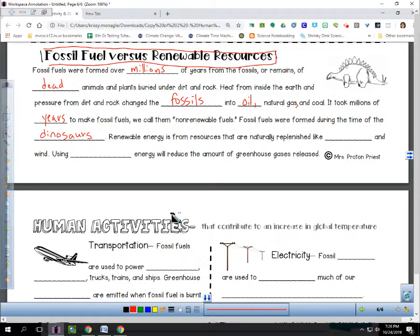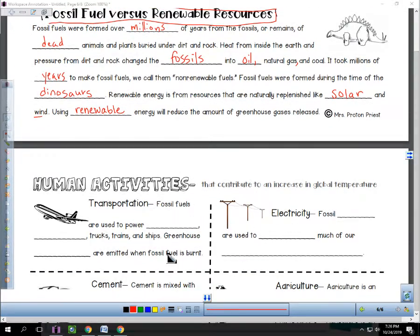Renewable energy is from resources that are naturally replenished, those natural resources that are renewed at the same rate, like solar and wind. Using that renewable energy will reduce the amount of greenhouse gases released. Finally, for page 63 for us, we're going to look at the human activities.